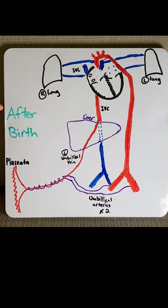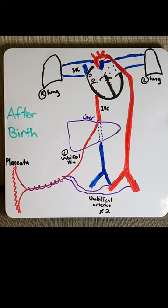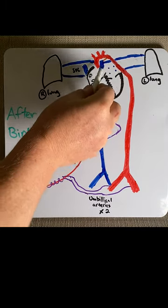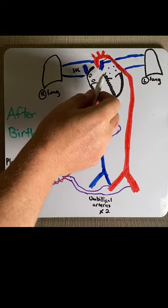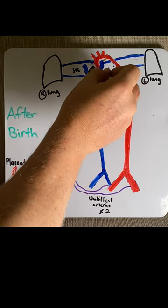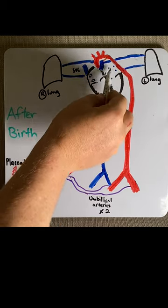Once the baby is born and takes their first breath and the lungs open, the pressure gradients all change. On the left side of the heart, the flap that allowed the foramen ovale to be patent now closes, which separates the right and left atria.